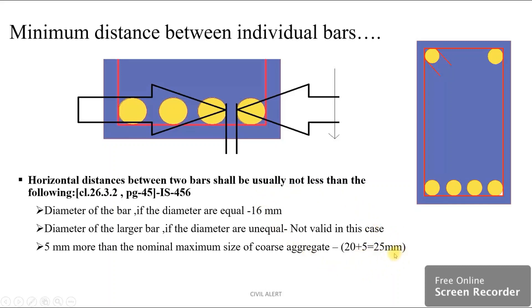The greater value is 25 mm, which we use to check the distance between bars. We have to check the distance between bars on the bottom.